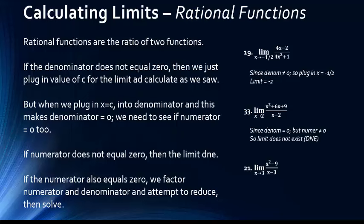However, in some cases, if the numerator also equals zero after we've checked the denominator, we try factoring to see if we can reduce the fraction. In problem 21, plugging in 3 to the denominator gives zero, and plugging in 3 to the numerator gives 9 minus 9, which also equals zero. So we factor: the numerator is a difference of perfect squares, which factors into x plus 3 times x minus 3. The x minus 3 terms cancel with the denominator, reducing to the limit as x goes to 3 of x plus 3. Plugging in gives us 6.